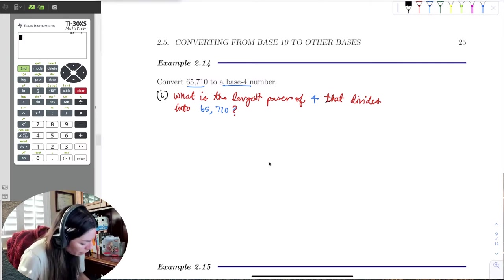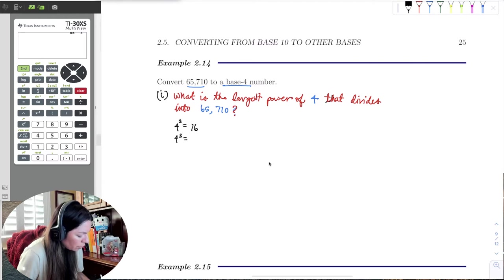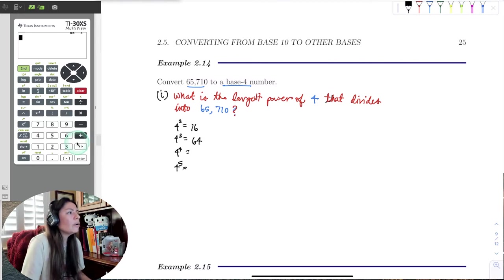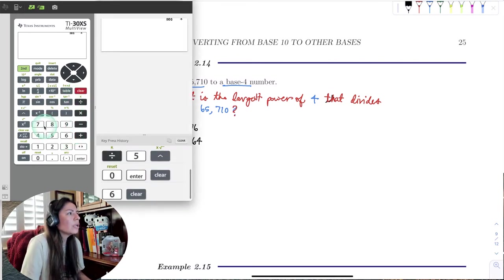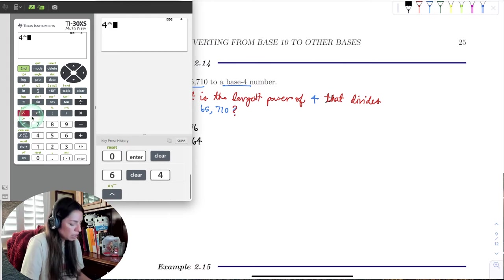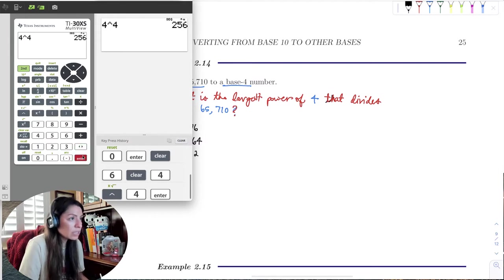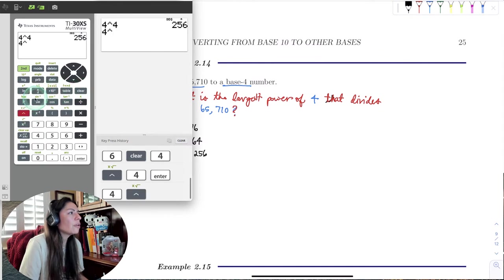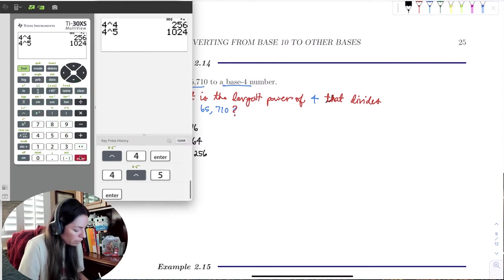So I definitely know maybe 4 squared, that's 16, so that's too small. So let's try 4 cubed, which is 64. That's still too small. I need bigger. So let's try 4 to the 4th and 4 to the 5th. Let's see what that takes me. So if I go to the calculator here, 4 to the 3rd is 64. So 4 to the 4th is 256. And then 4 to the 5th, and that's 1,024.